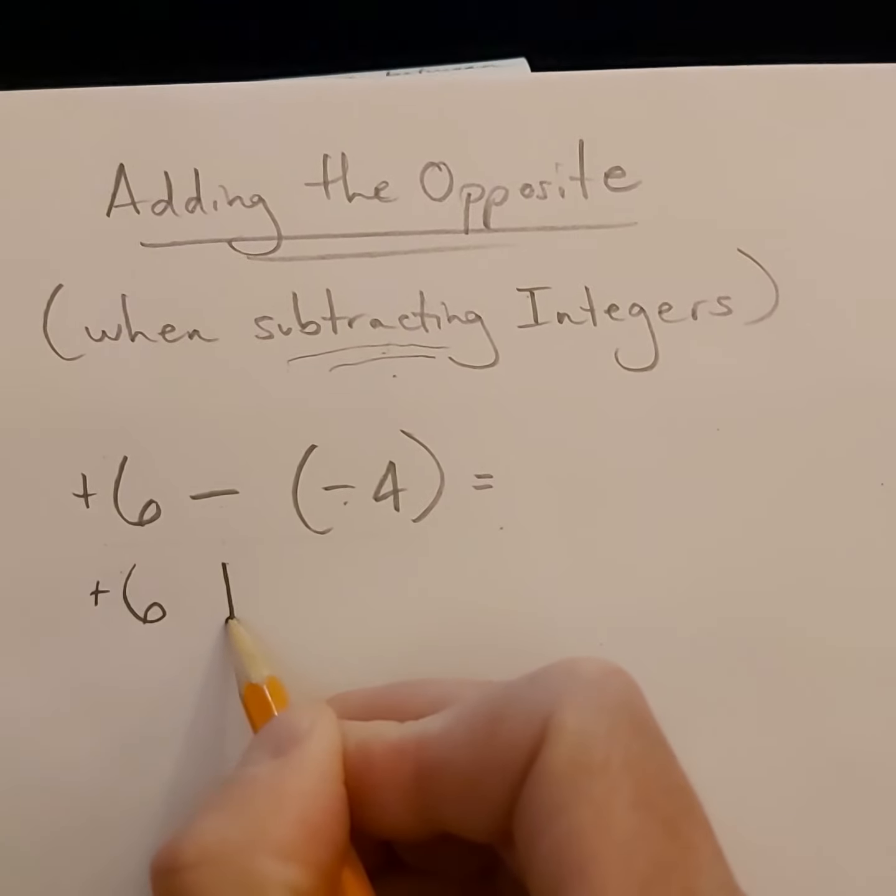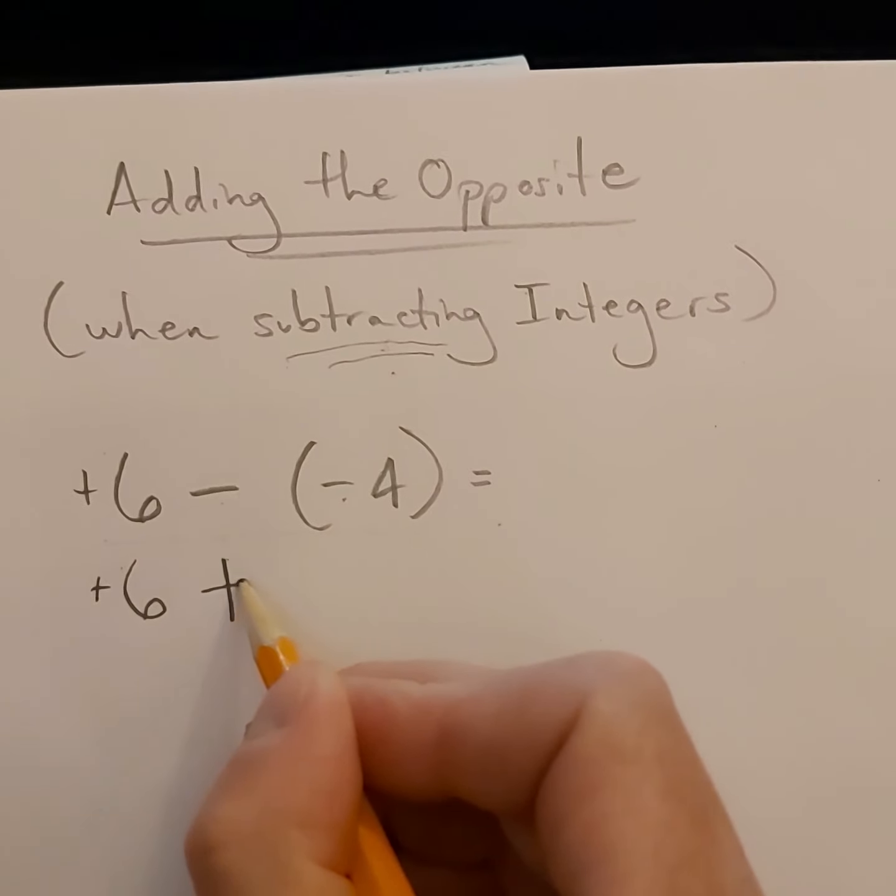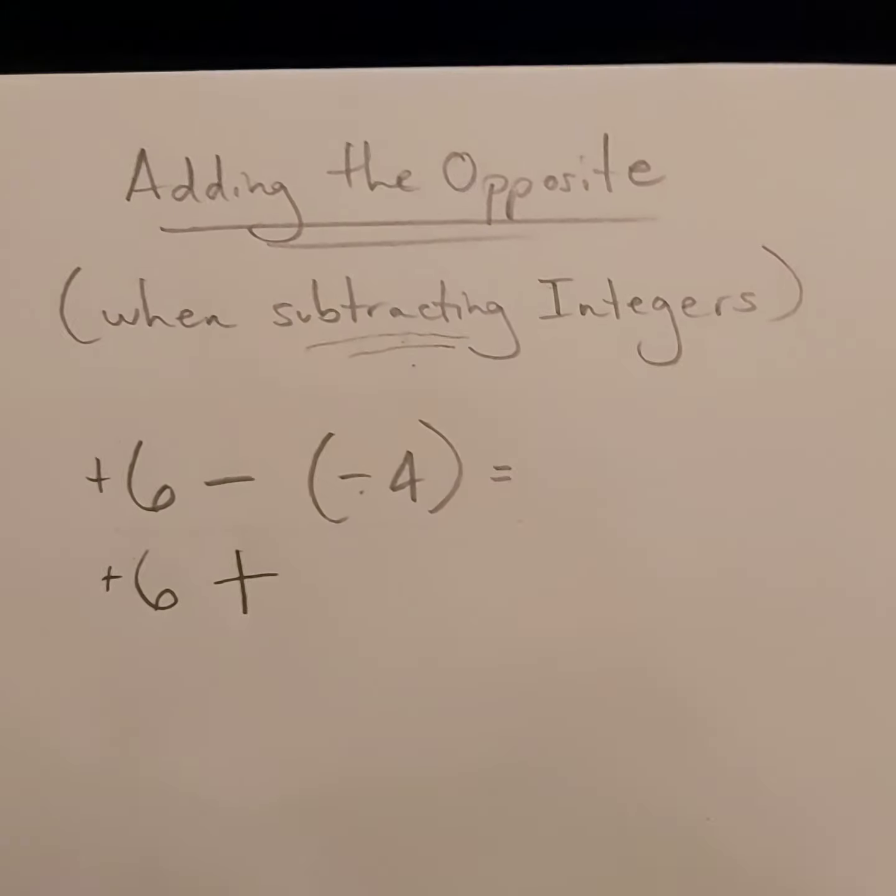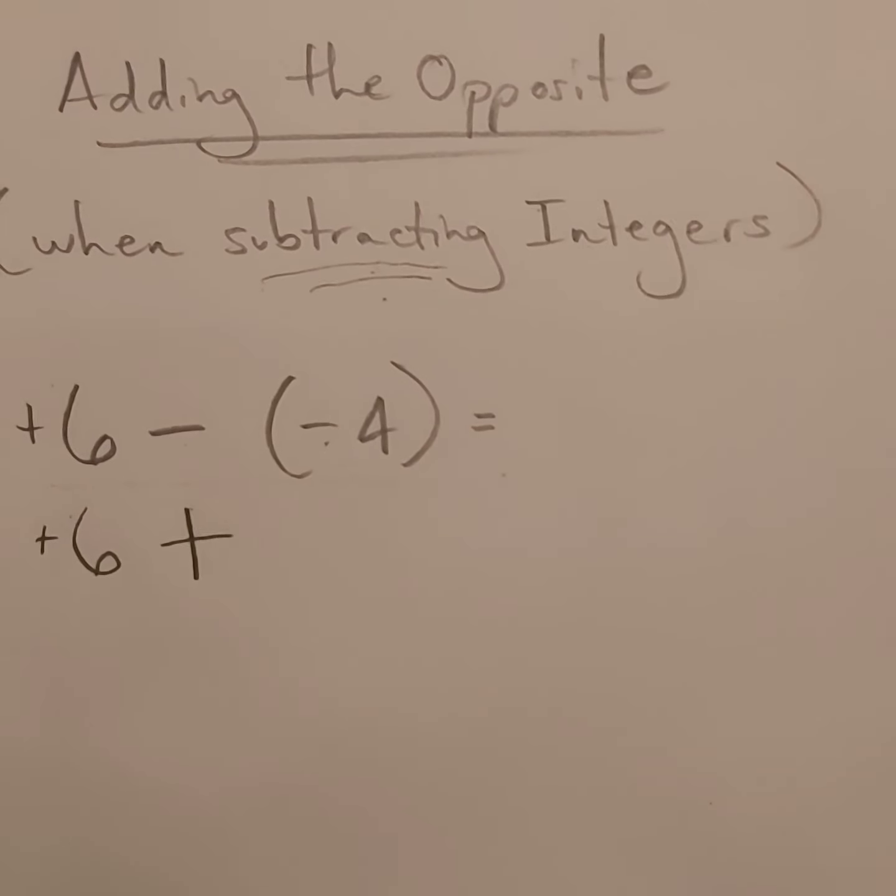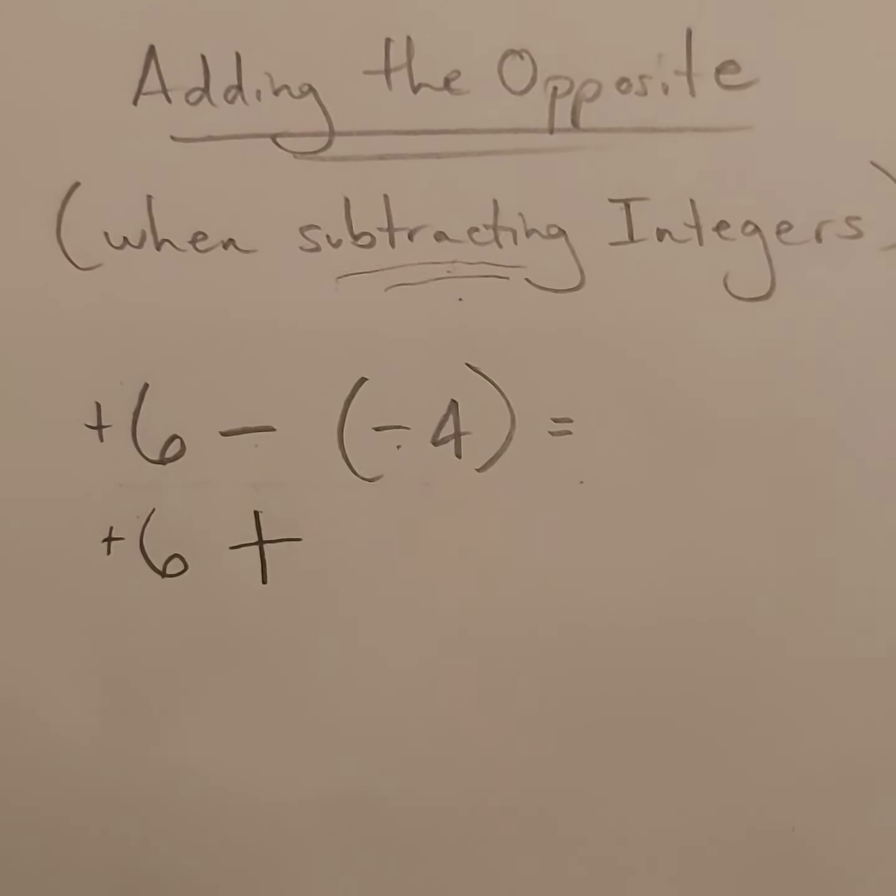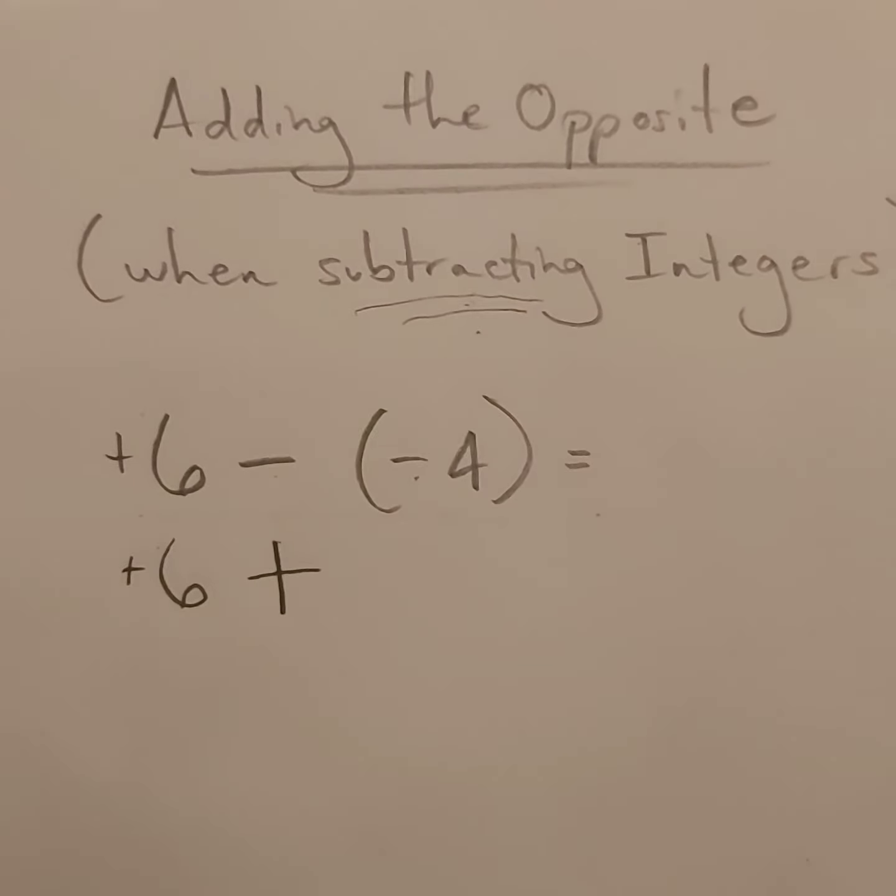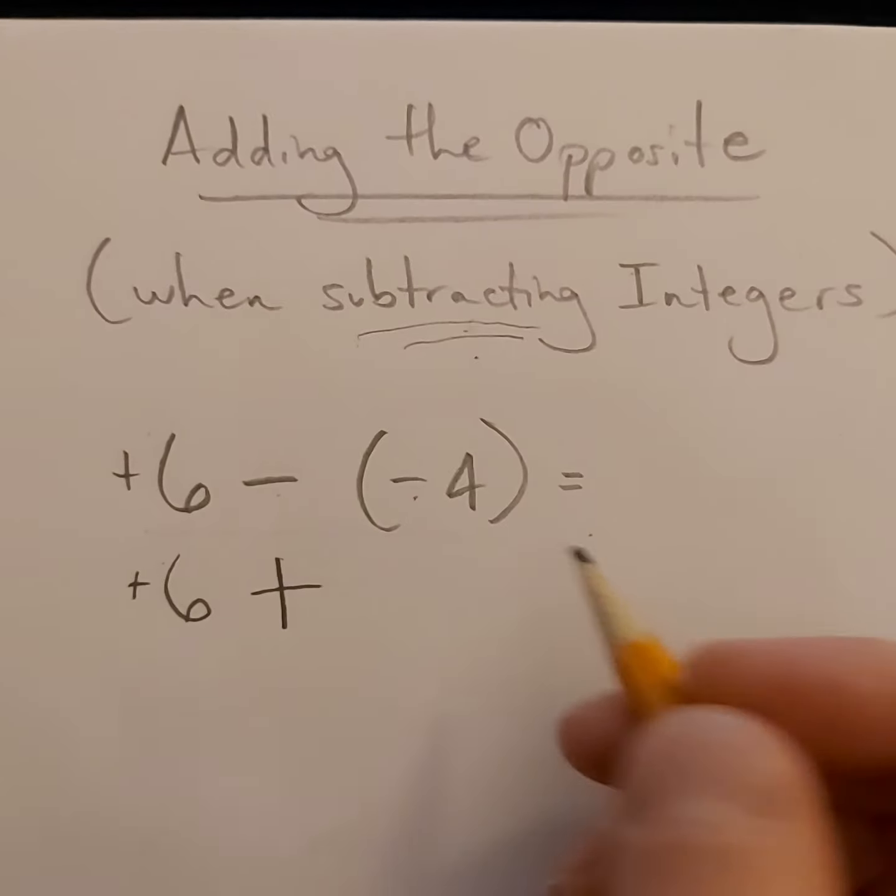However, my subtraction sign is going to become an addition sign now. So I'm taking control here, and I'm saying, you know what, subtraction is tricky, so I'm gonna stick with adding because it's easier. Sometimes it's okay to take the easy way out.